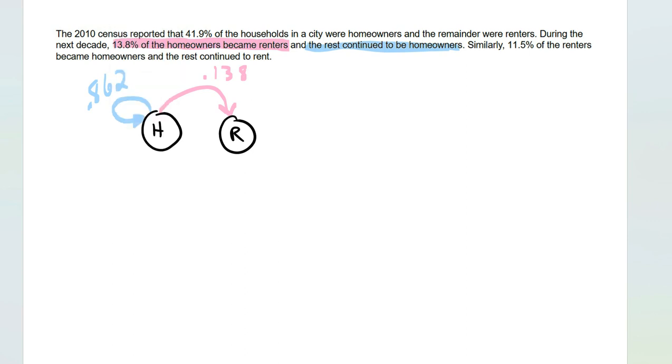And then similarly, 11.5% of the renters became homeowners. So renters over to homeowners, that's 0.115 and the rest continued to rent. So take 1 whole minus 0.115 and that is 0.885.